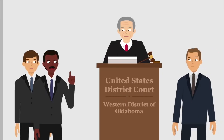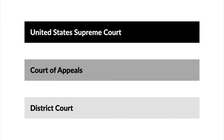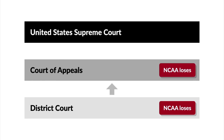Subsequently, the universities of Oklahoma and Georgia sued the NCAA in the United States District Court for the Western District of Oklahoma under the Sherman Act. Following trial, the court held that the NCAA's college football television policy was a per se violation of the Sherman Act and granted injunctive relief. The NCAA appealed and the Tenth Circuit affirmed. The United States Supreme Court granted cert.